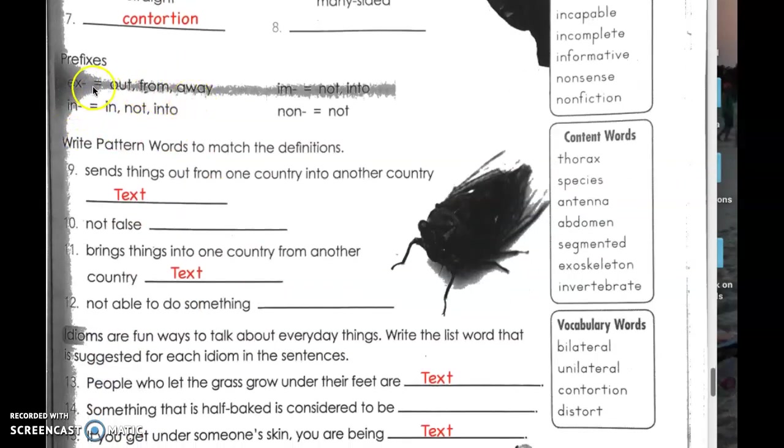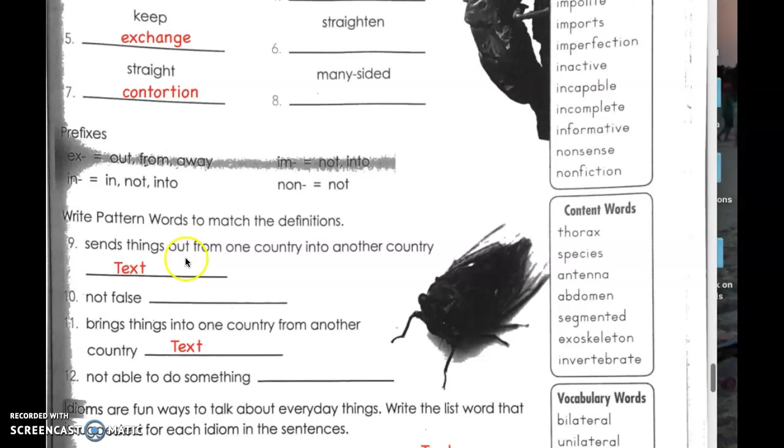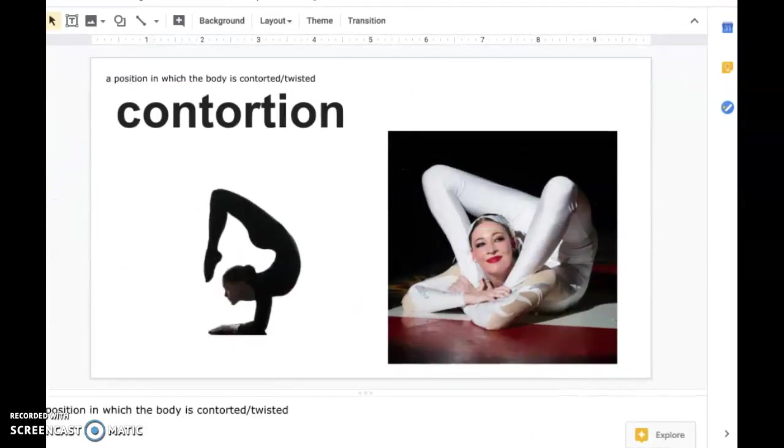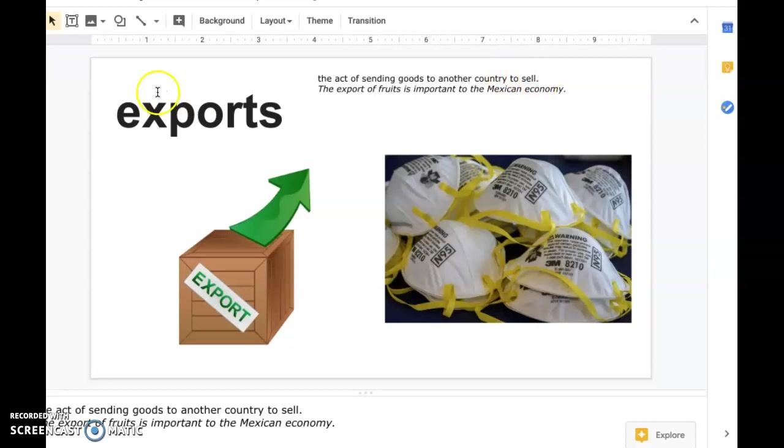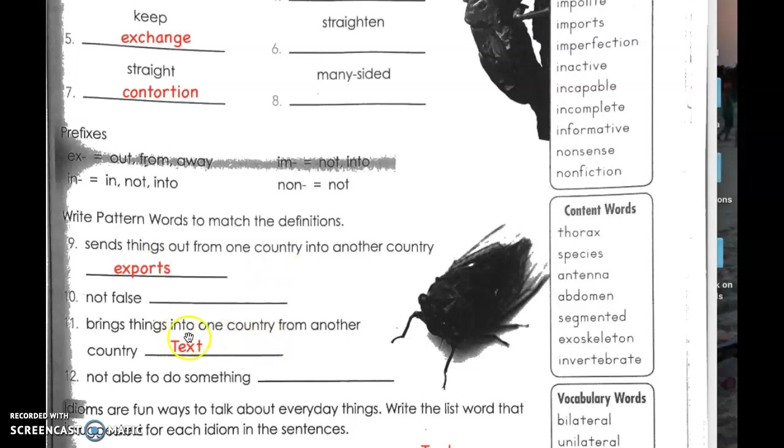Prefixes. Ex means out, from, away. In means not. Non means not. Using these prefixes, we are going to write pattern words to match the definitions. Number nine, sends things out from one country into another country. We need the prefix ex. If you're sending something out of the country, what is that called? Act of sending goods to another country, exports. Sending something out, like exporting the mask out of the country. Eleven brings things into one country from another country. So that's the opposite of number nine. Bringing something in is imports.